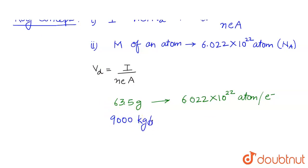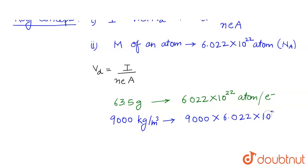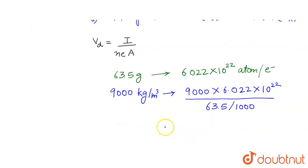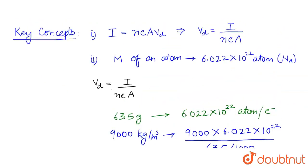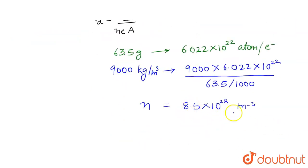So for 9000 kg per meter cube of copper, we need to find how many electrons per meter cube it contains. On solving, we get: 9000 × 6.022 × 10²³ divided by 63.5 grams — converting 63.5 grams to kg by dividing by 1000. On solving this, we get 8.5 × 10²⁸ electrons per meter cube. This is our small n, the number of free electrons per unit volume in the expression for vd.